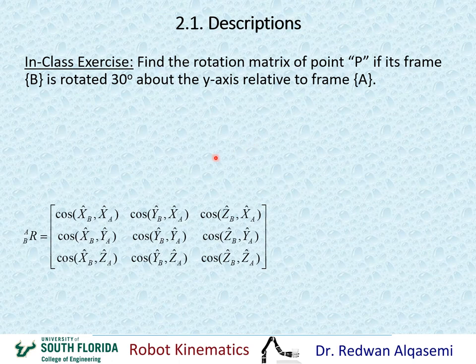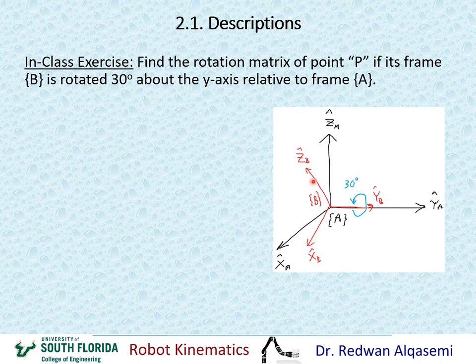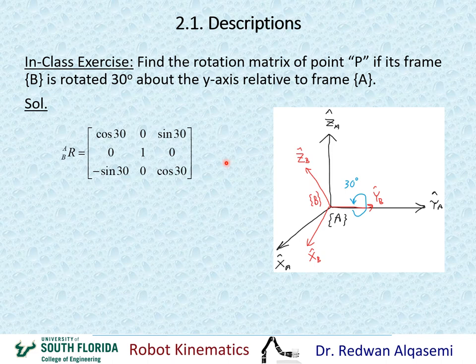For rotation about the Y-axis: YB and YA are the same line. By the right-hand rule with the thumb in the Y direction, ZB and XB rotate 30 degrees. Using direction cosines, the rotation matrix looks a little different from R about X and R about Z — we'll see a summary of all three in the next slide. Make sure your answer matches this result.